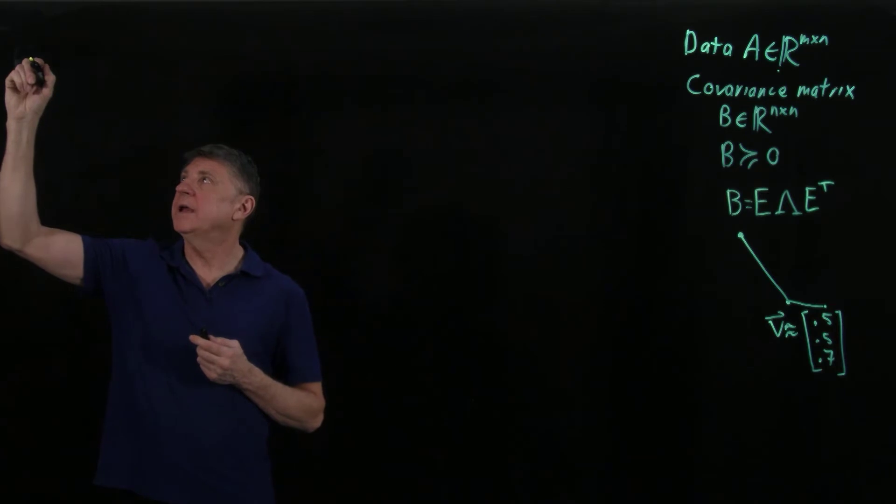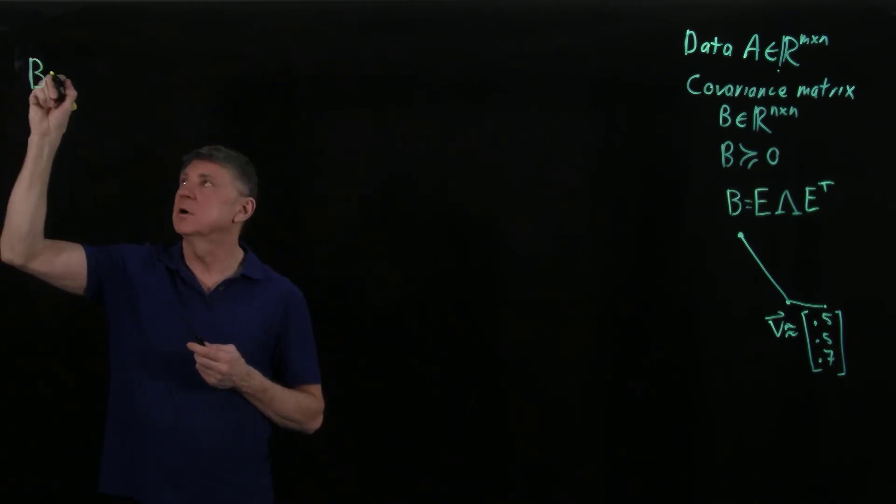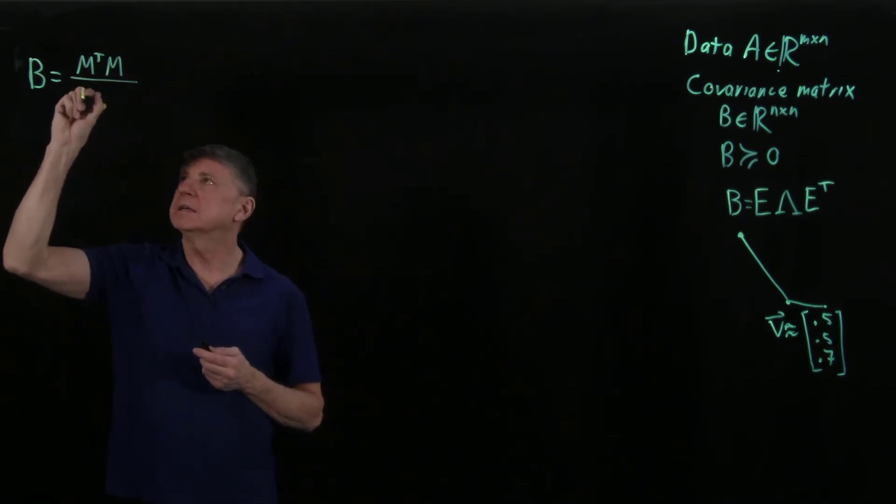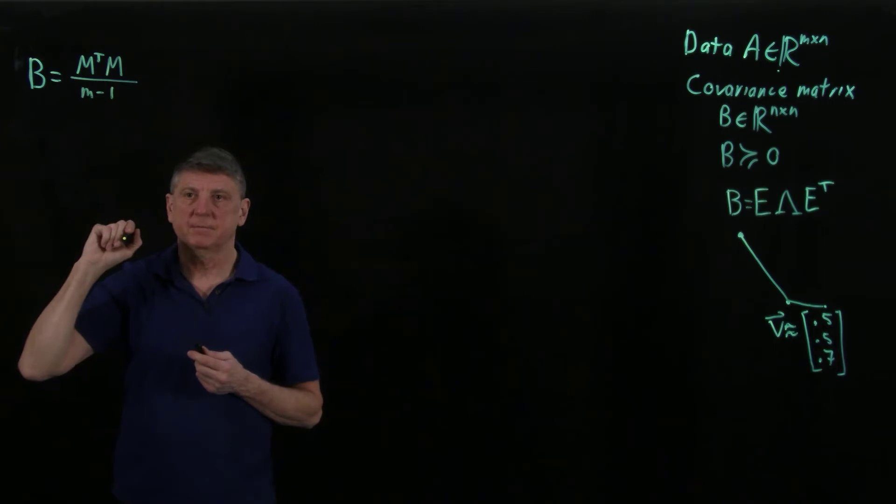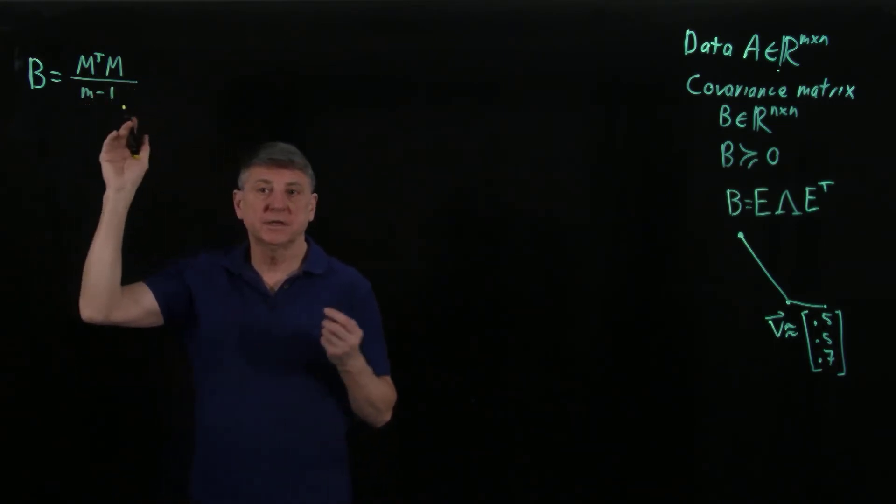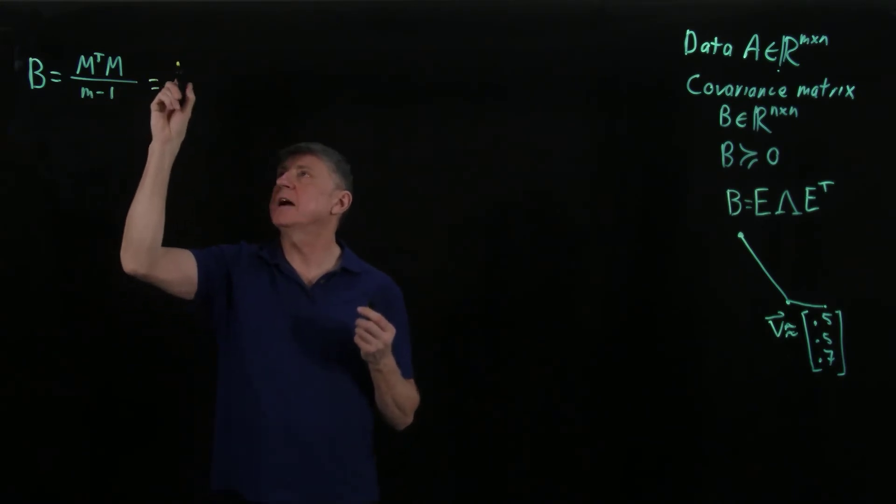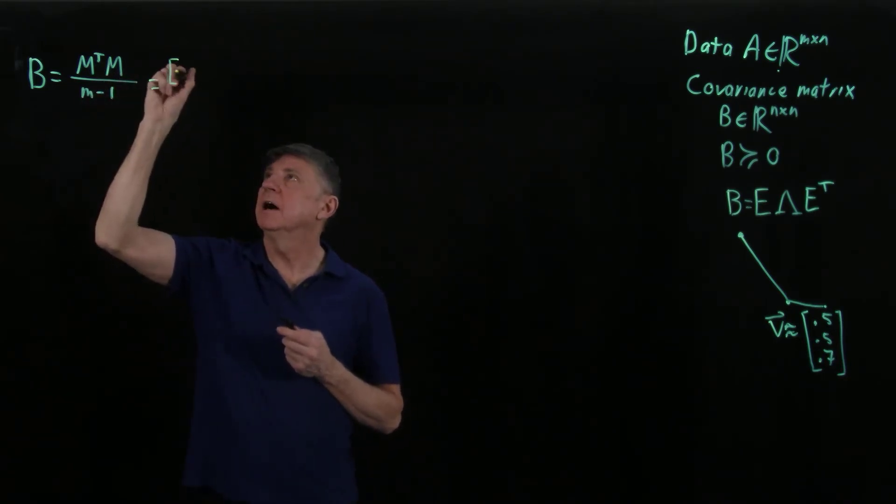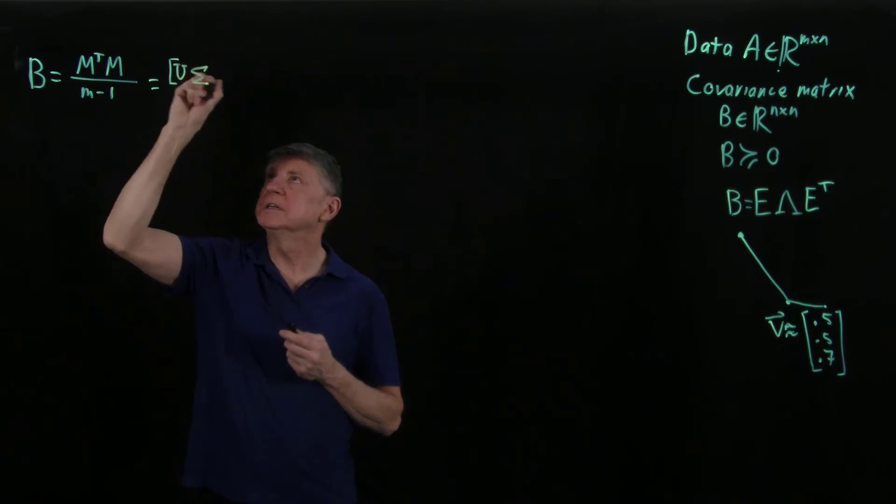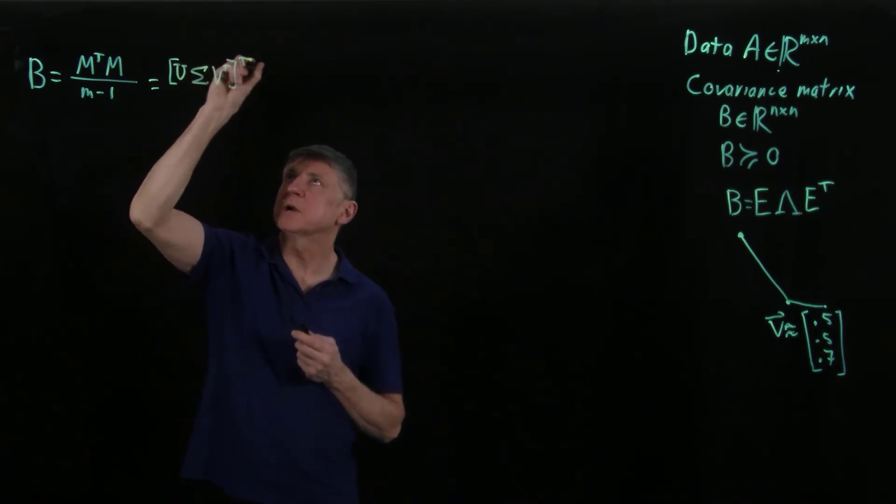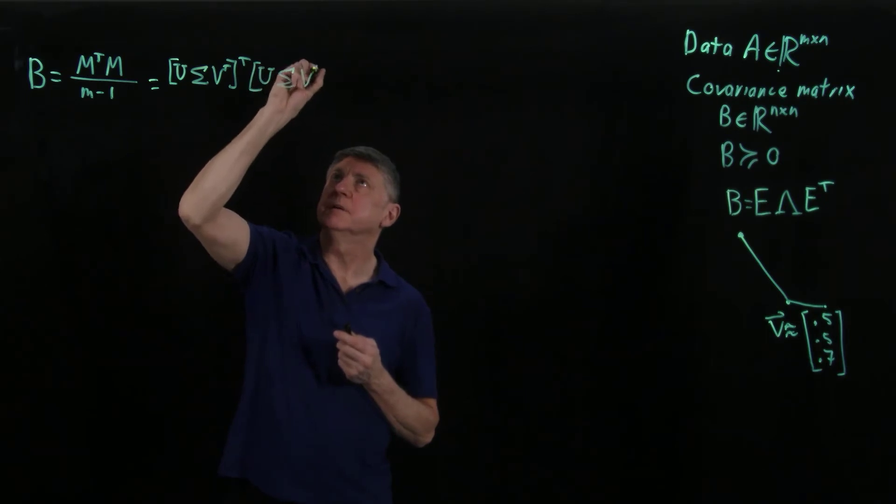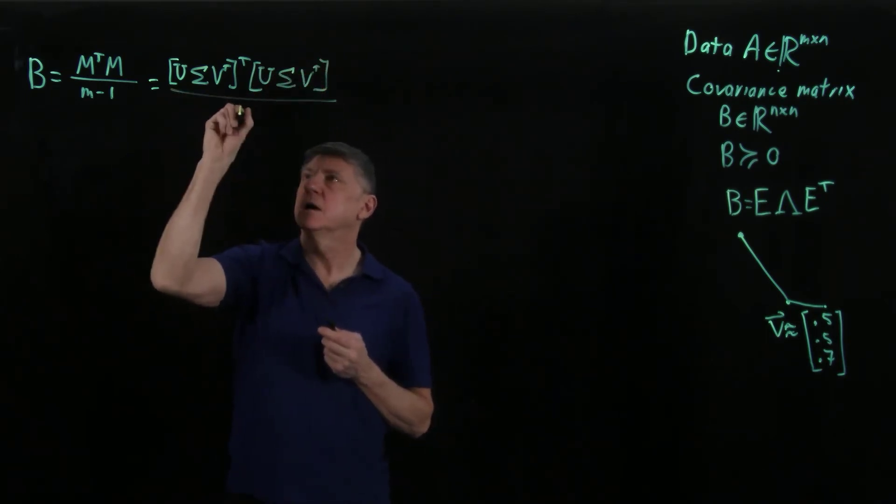So let's recall that what we had was the covariance matrix was the 0 mean data matrix transpose times the 0 mean data matrix divided by one less than the number of observations that we have. And I can write m using the singular value decomposition. So I could say that that equals, so if I take this transpose, that would be u sigma v transpose transpose times u sigma v transpose divided by m minus 1.